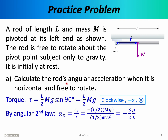Our goal is to find the angular acceleration. From the angular version of Newton's second law, angular acceleration equals torque divided by moment of inertia. For a rod rotating around one end, the moment of inertia is (1/3)ML². The torque is −(L/2)·mg, with the minus sign indicating it points in the negative Z direction. Simplifying, the angular acceleration in the Z direction is −(3/2)·g/L.